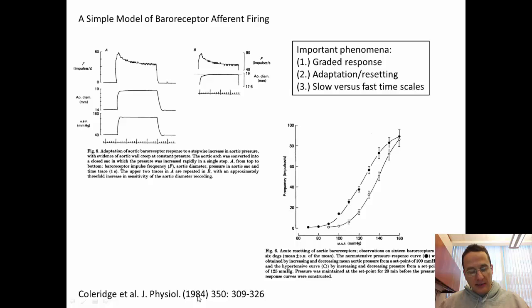You have this adaptation phenomena, which is very important. And that is, in these experiments published in 1984 by Coleridge, this was the response to a pressure ramp measured under normal conditions. The same animal had its pressure raised by 25 millimeters of mercury to a mean level of 125 millimeters of mercury for 20 minutes. And then another baroreflex response curve was measured. And you can see that the baroreceptors shift, the response curve shifted to the right. And the baroreceptors are said to have adapted.